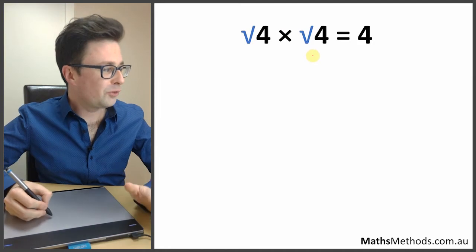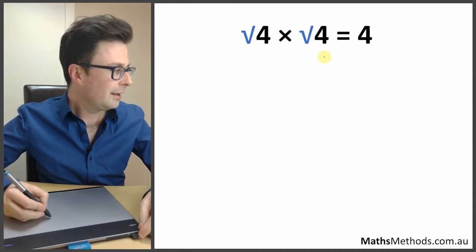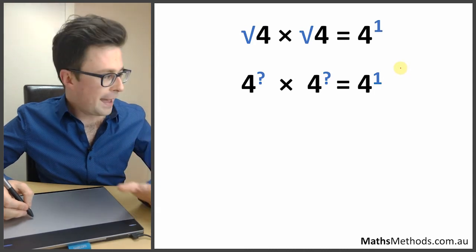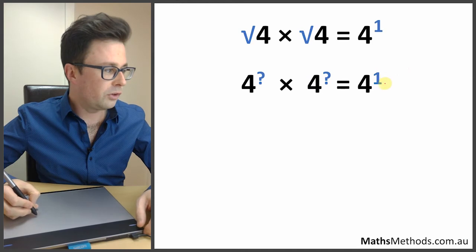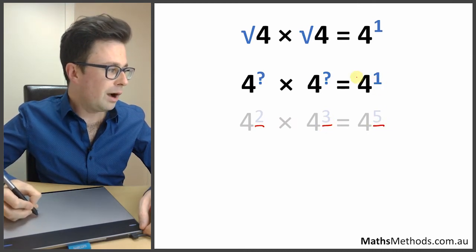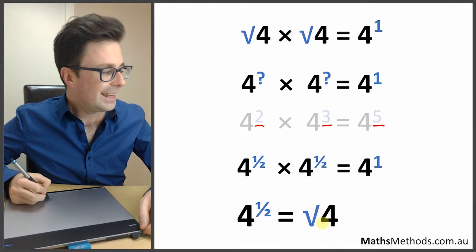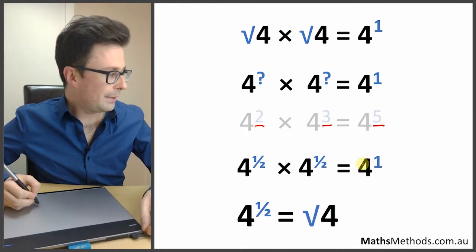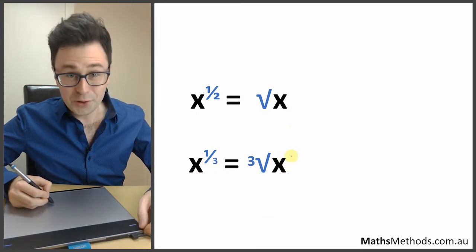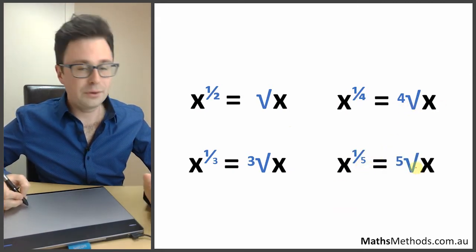The square root of 4 times the square root of 4 equals 4, which makes sense because the square root of 4 is 2 and 2 times 2 is 4. We can write 4 as 4 to the power of 1. So if we represent the square root as a power — 4 to the power of what, times 4 to the power of what, gives 4 to the power of 1 — it must be a half plus a half. So 4 to the power of a half equals the square root of 4. Similarly, something to the power of a third is the cube root, a quarter is the fourth root, and a fifth is the fifth root.